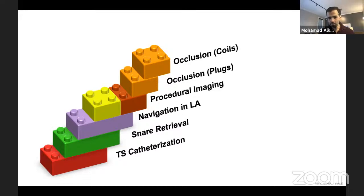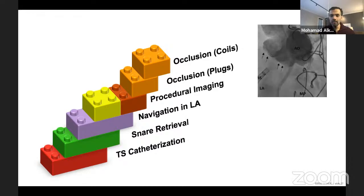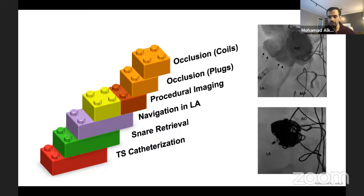In this case we used transseptal catheterization, snare retrieval techniques, navigation in the left atrium, careful procedural imaging with CT and TEE, and multiple occlusion techniques — plugs and coils. It's not always just plugs; coils are also occlusion techniques. We must familiarize ourselves with anything we could use to occlude undesired areas in the heart.